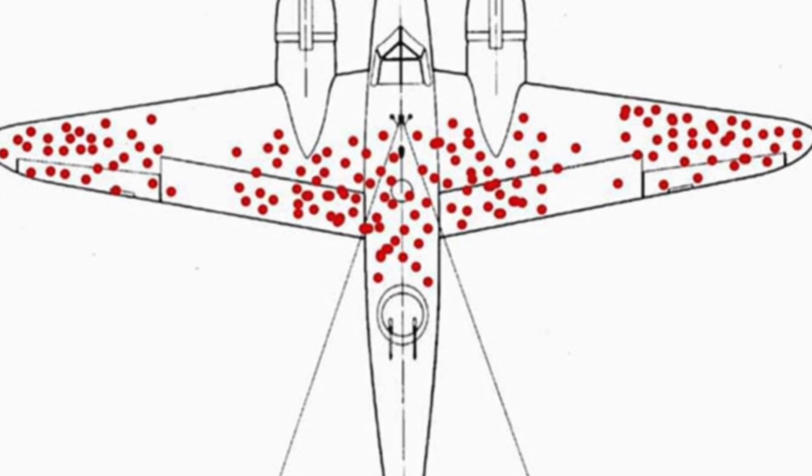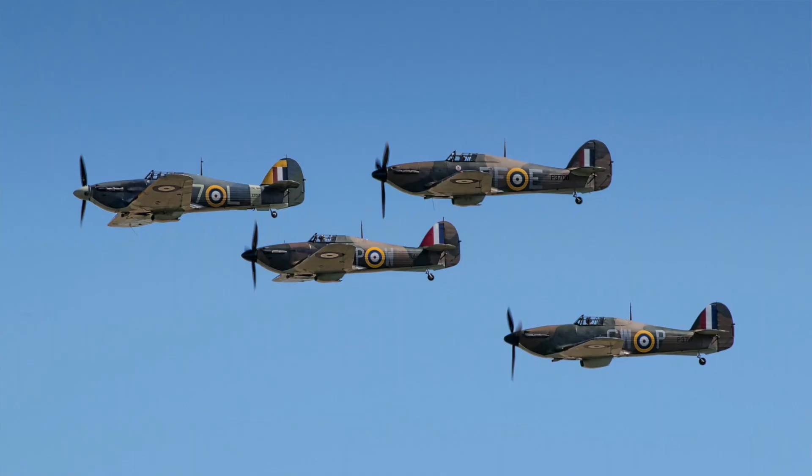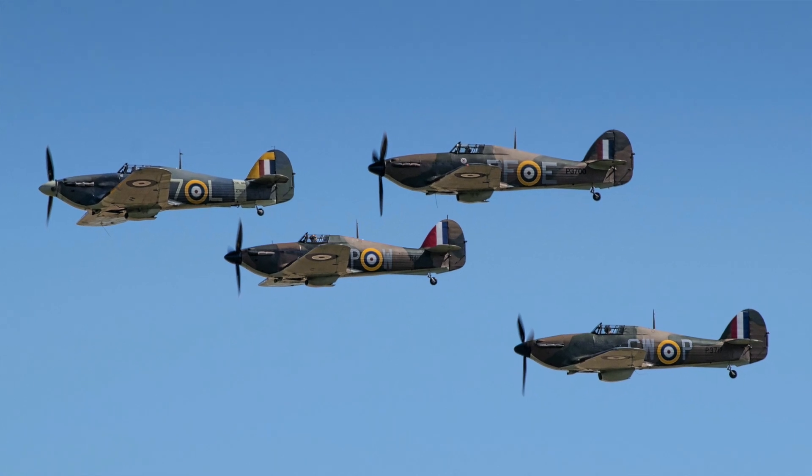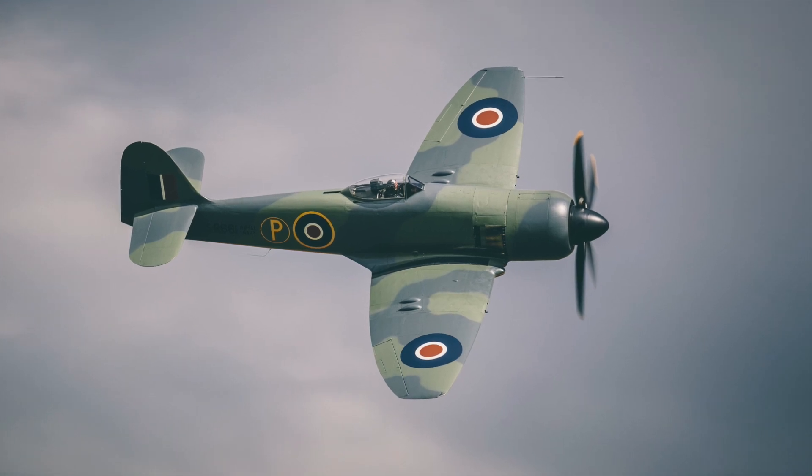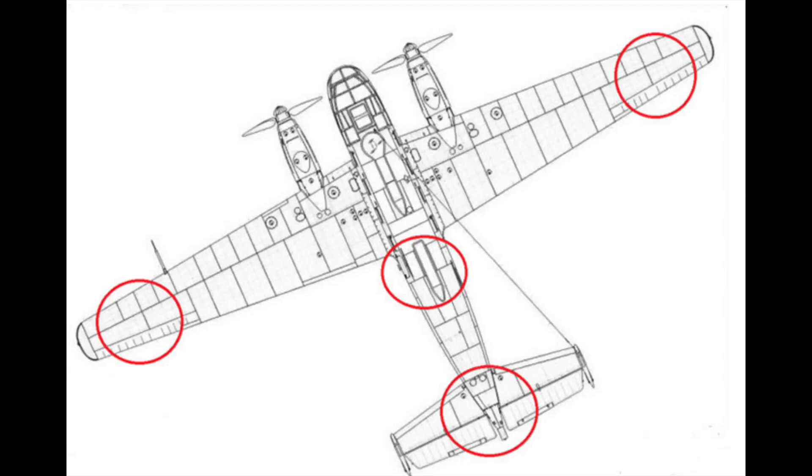The initial statistical approach was to count where you had the most holes and protect that part of the plane with extra armor. But Wald thought about the holes they couldn't see. The holes they didn't see were on planes that never returned home — they were hit so badly they crashed. All those crashed planes with their bullet holes were missing data. The planes that did return were the lucky ones, hit in less vulnerable parts like the wings or fuselage, but not the engine.